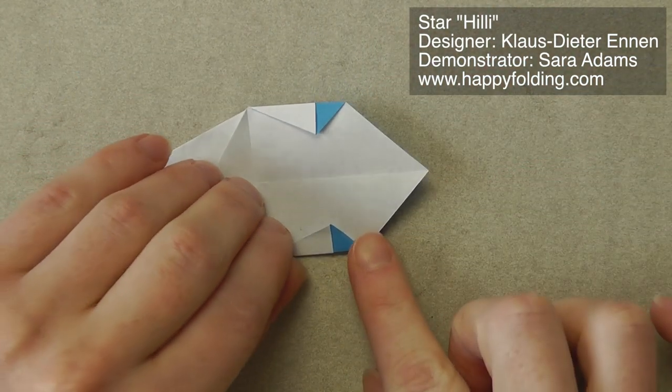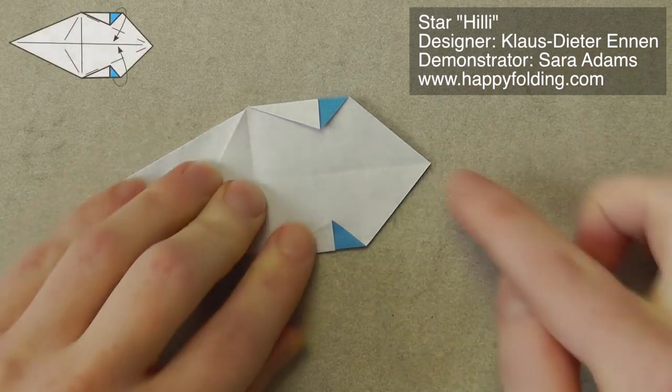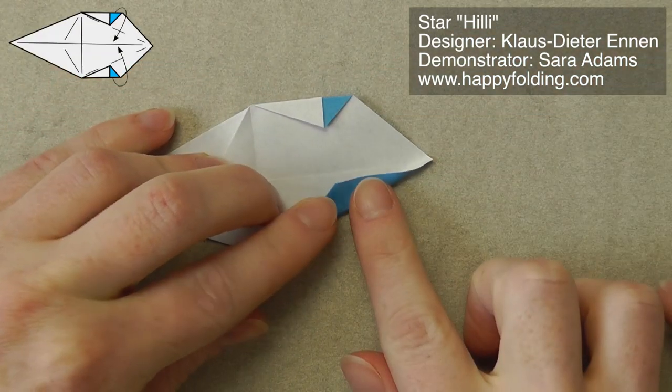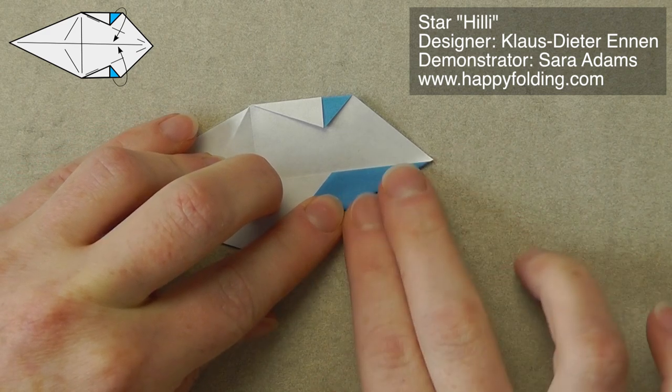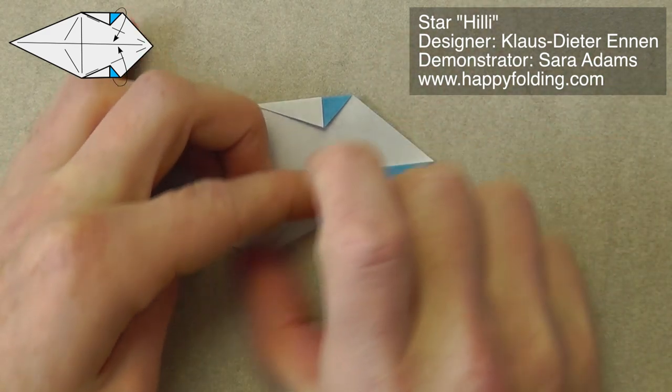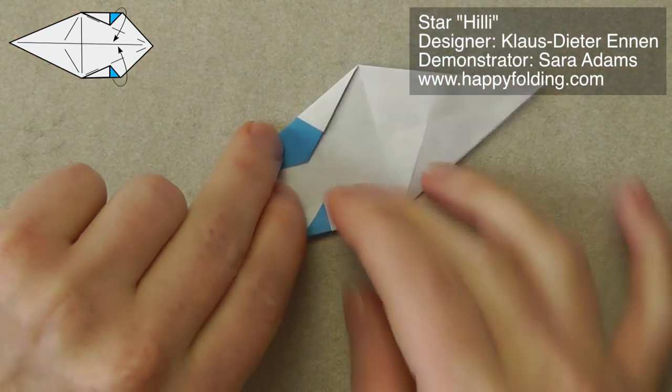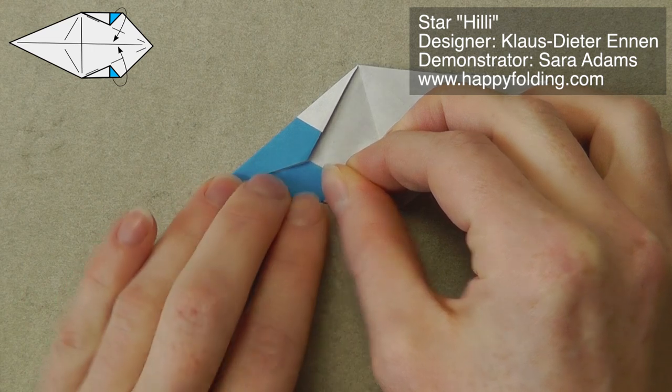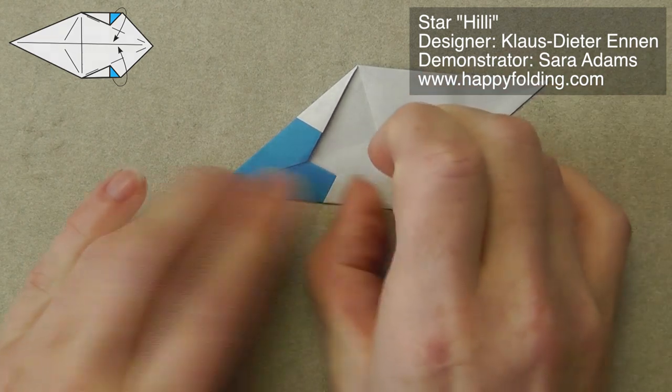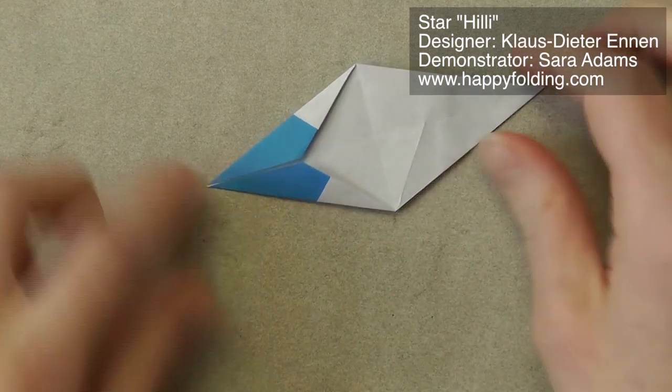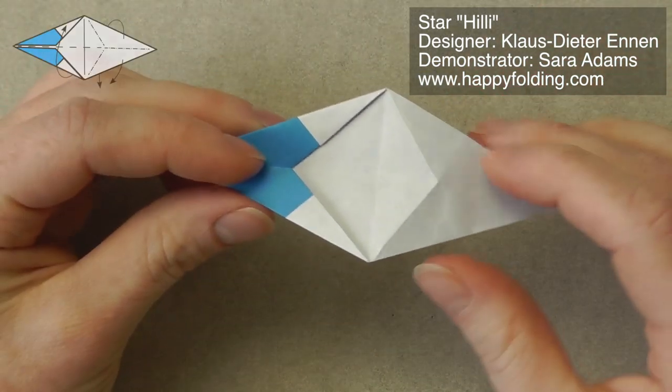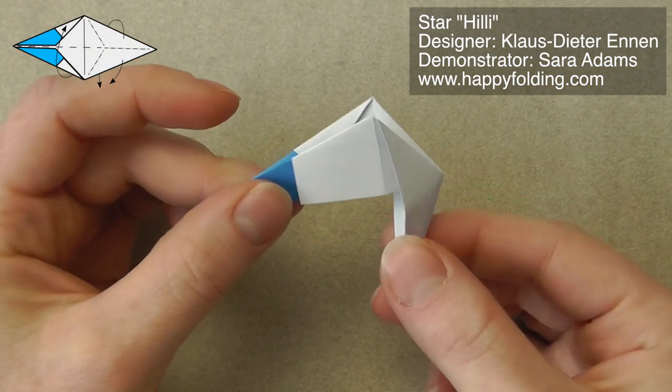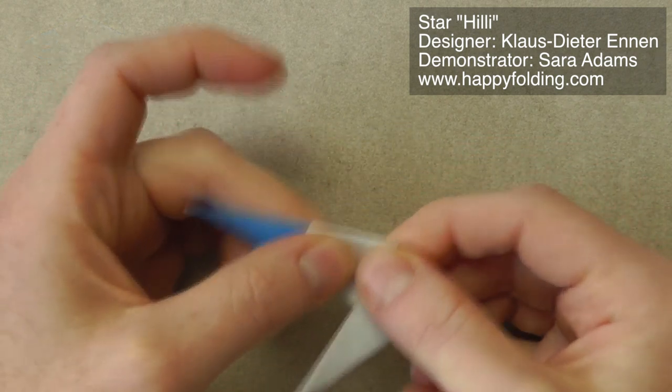And now, we're going to take this edge right here, this raw edge, and bring it to the center line, folding in that paper, forming the colored tip. Same thing on the other side, just like that. Now, we're going to fold in half on this side while letting that fold together, just like this.